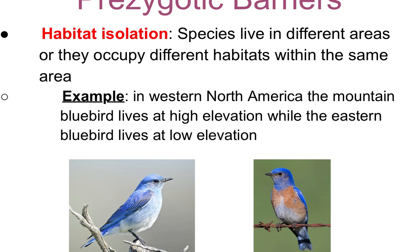Habitat isolation occurs when species occupy different habitats within the same geographical location. In western North America, the mountain bluebird lives at high elevation while the eastern bluebird lives at lower elevation. They share the same geographical area, but due to elevation there is a habitat barrier isolating the two, and you can see from pictures that they now look very different physically.